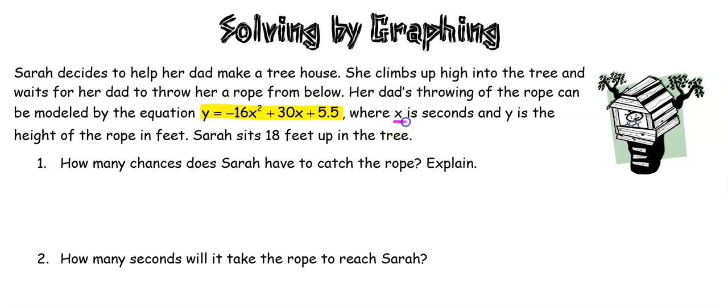So it is important to note what it tells you your variables are representing. So x is going to be the time that's passing, x is in seconds, and then y is the height of the rope in feet. So height is that vertical distance, and Sarah she's sitting 18 feet up into that tree and that's a really important piece of information that's going to come into play.